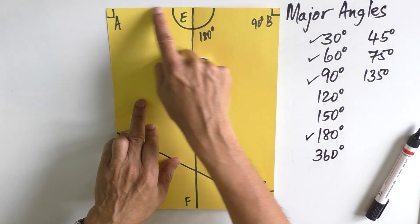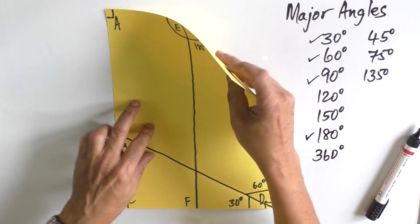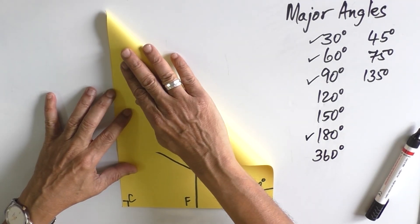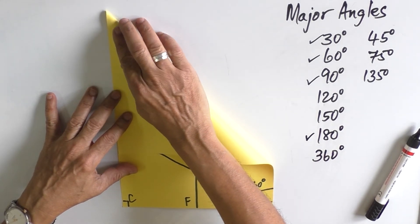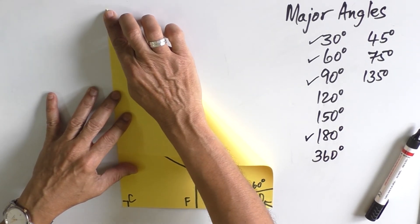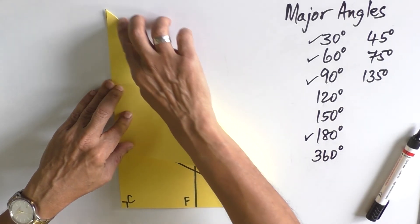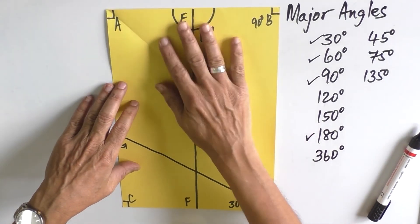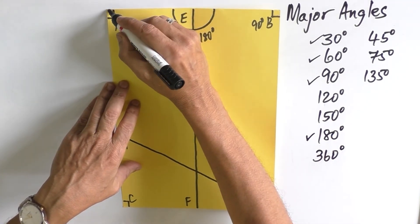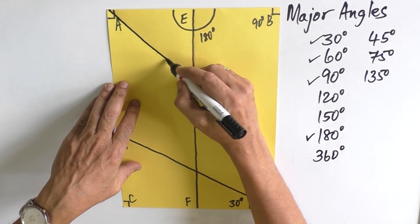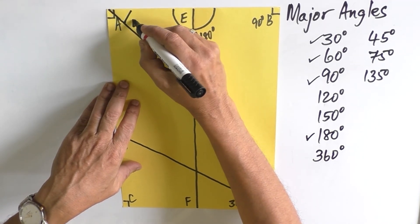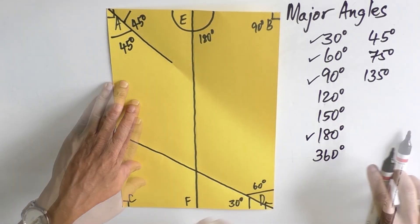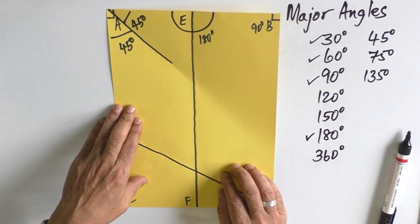So what we do is take side AB and let it coincide on line AC. If you just fold it, you make the angle into two parts. Angle A is made into two parts. Now if you measure, each part will give us 45 degrees.